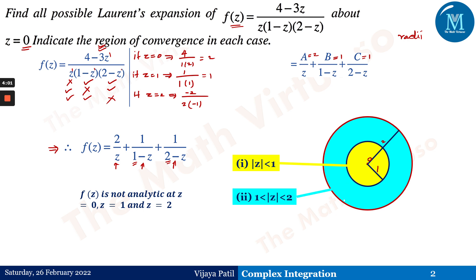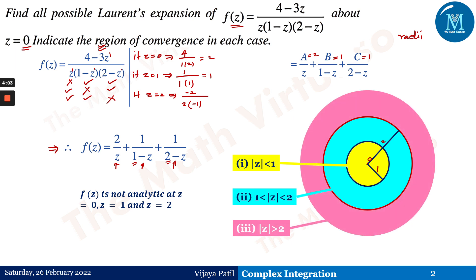The third region is |z| > 2 — all points lying outside the circle centered at zero with radius 2. This pink part is the third region. These are all possible Laurent expansions for this function.